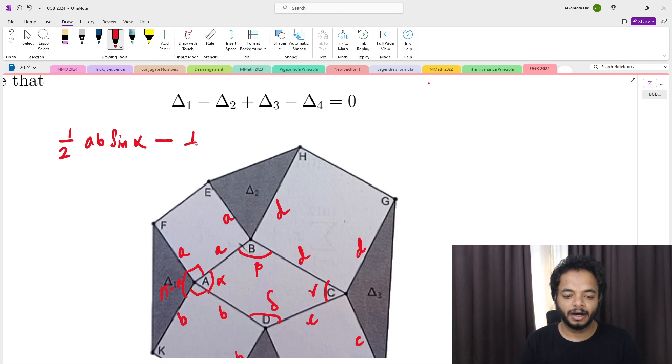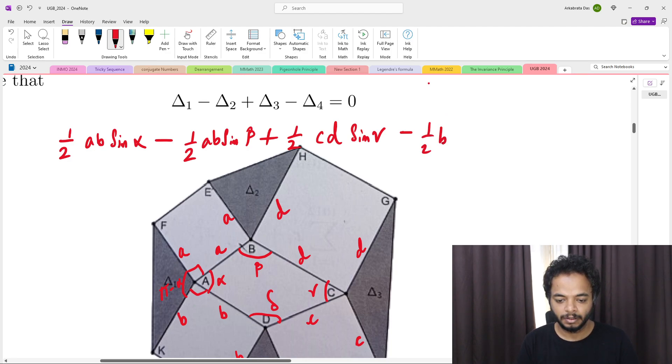Now minus half delta 2, so delta 2 is ad sin beta, plus delta 3 is cd sin gamma, and minus delta 4 is bc sin delta. Now I have to prove that this equals 0, so this part equals this. I have to show that this is equals to 0.